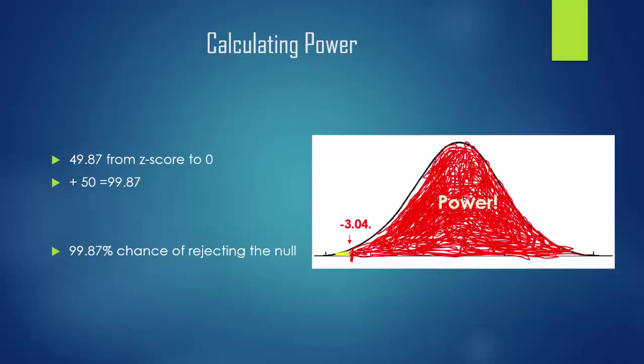Lastly, reducing the standard deviation is another way to increase statistical power. This one isn't very easily manipulated. Its best option for changing is in the design of the study, having very good and reliable study techniques, or by selecting your sample from a more homogenous group in which the responses that you receive are more likely to be the same, or at least more similar.